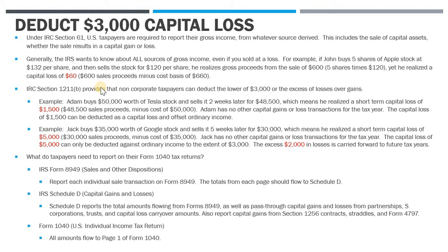Moving into the $3,000 capital loss limitation — you can find that in Section 1211(b) of the Internal Revenue Code. Section 1211(b) says that non-corporate taxpayers, meaning individuals, can deduct the lower of $3,000 or the excess of the losses over the gains. Let's look at some examples to highlight the distinction.